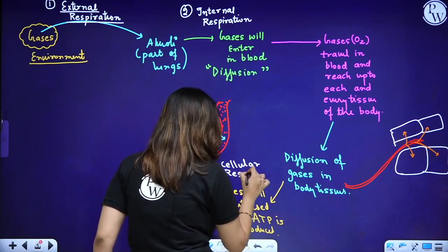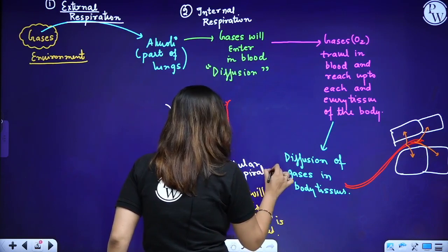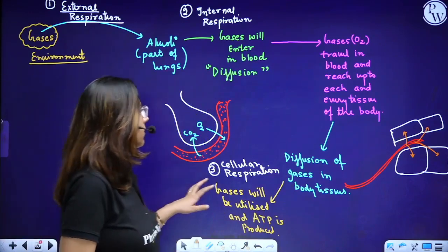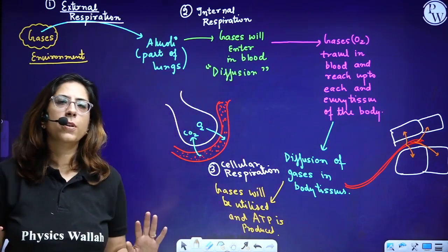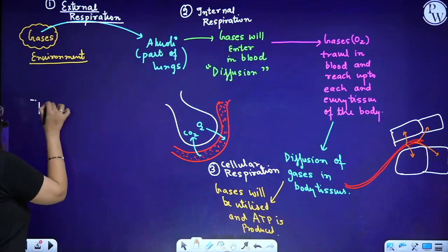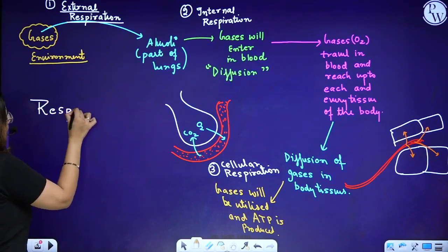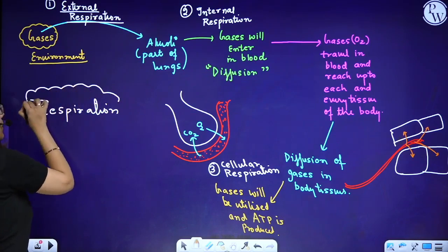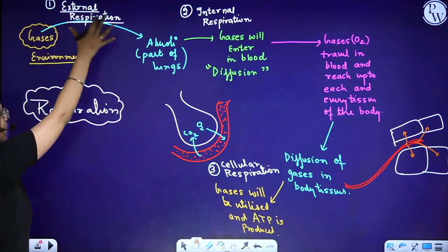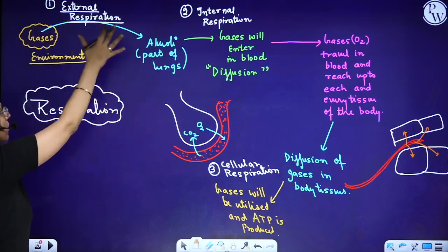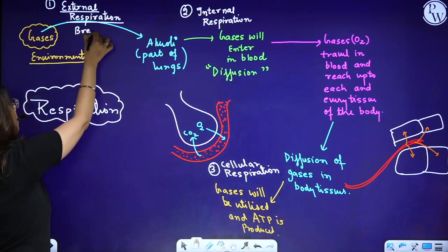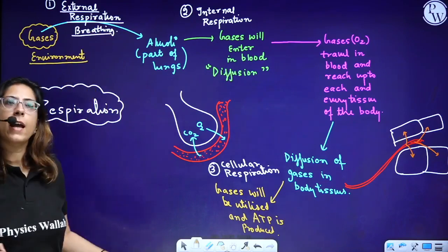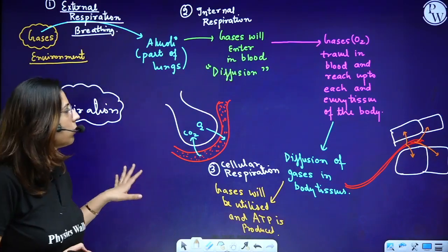These are the three words I will be using a lot in this chapter. External respiration, internal respiration, and cellular respiration. And breathing — mentioned in the chapter title — is your external respiration. So right now, we are just breathing, and all these processes are happening in our body.